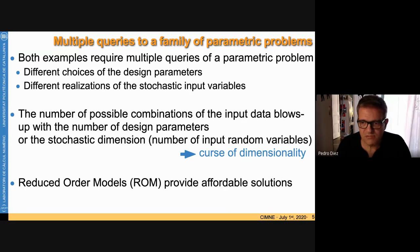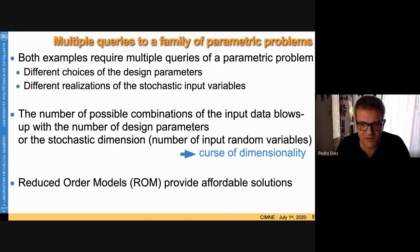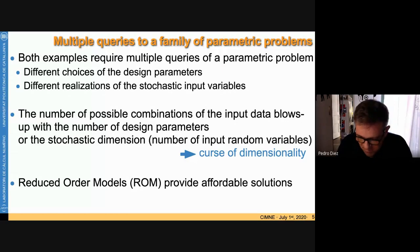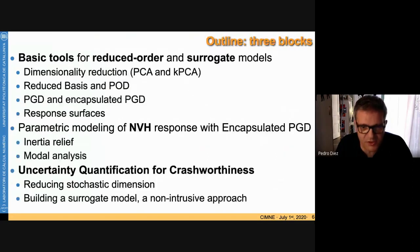These two problems share similarities because both require multiple queries to parametric problems — one with design parameters (geometrical, material, thicknesses) and the other with stochastic realizations of similar parameters. Accounting for all possible combinations leads to the curse of dimensionality, requiring reduced order models.